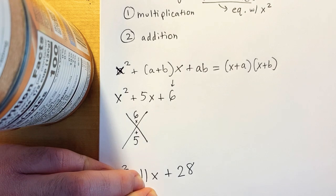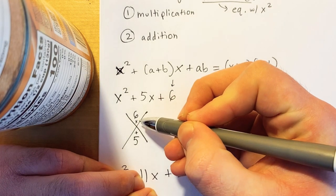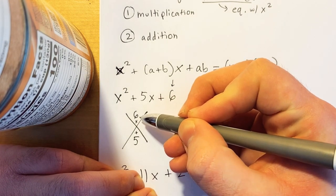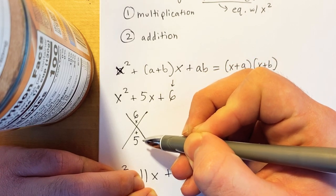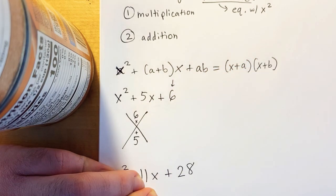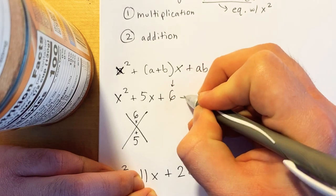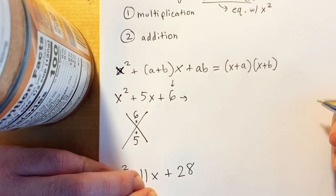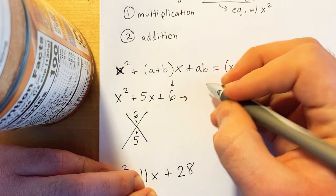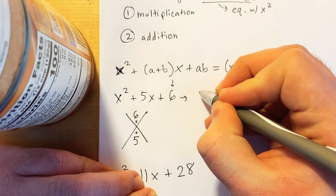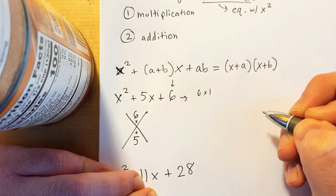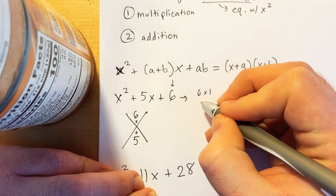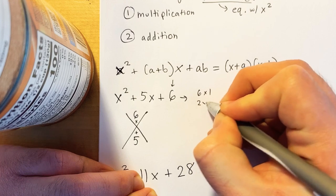To solve this, we're going to find what two numbers multiplied together equal 6 and what two numbers added together equal 5. My first step is to find the factors of 6. I know that 6 could be 6 times 1, or it could be 2 times 3.